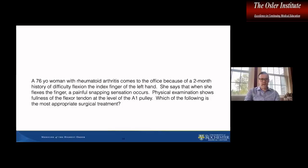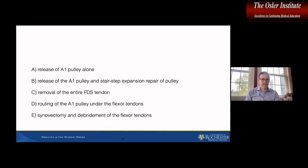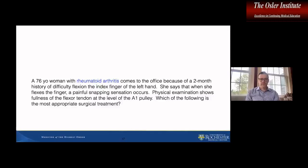Here is another trigger finger question. A 76-year-old woman with rheumatoid arthritis comes to the office because of a two-month history of difficulty flexing the index finger of the left hand. She says that when she flexes the finger, a painful snapping sensation occurs. Physical examination shows fullness of the flexor tendon at the level of the A1 pulley. Which of the following is the most appropriate surgical treatment? The choices are: release of the A1 pulley; release of the A1 pulley and stair-step expansion; removal of the entire FDS tendon; routing of the A1 pulley under the flexor tendons; or synovectomy and debridement of the flexor tendons. The correct answer is synovectomy and debridement — and the key detail, if you missed the rheumatoid arthritis part by not reading every word, would throw you in the wrong direction.